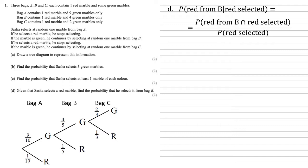So looking at our probability tree again, the path that gives us a red from B and a red selected, that's only one way to do that. That's green from bag A and red from bag B, so nine tenths times a fifth. Probability of red selected is either red from bag A, which is a tenth, red from bag B, so nine tenths times a fifth, or a red from bag C, so nine tenths times four fifths times a third.